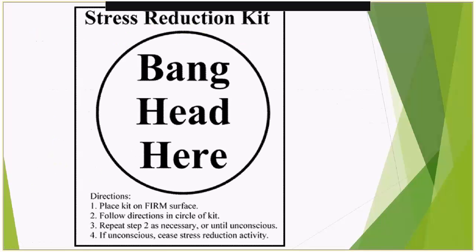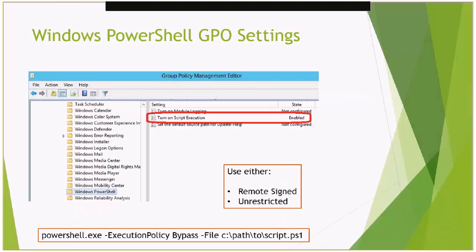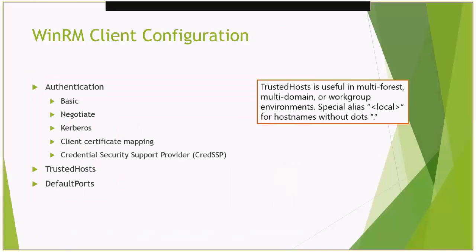Now that we've talked about the service configuration of WinRM and the PowerShell script execution policy, let's talk about the client side. WinRM — the Windows Remote Management Service — has two components: the WinRM client and the WinRM service. Any time you have a laptop or management server you're planning to deploy scripts from, you'll need to make sure the WinRM client configuration is set up to allow scripts to execute across all your systems. You can configure the WinRM client to use certain types of authentication: basic authentication (clear text — not recommended), negotiate, Kerberos, client certificate mapping, and CredSSP.